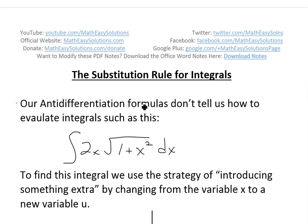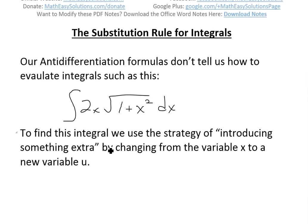Our anti-differentiation formulas, which I went over in my earlier videos (see the link below), don't tell us how to evaluate integrals such as this one: the integral of 2x times square root of (1 plus x squared) dx. The problem with this one is that it's more complicated because you're combining two functions.